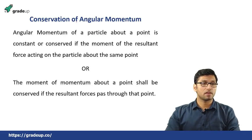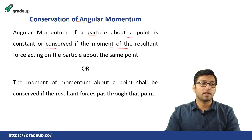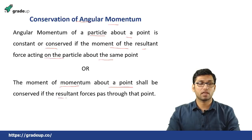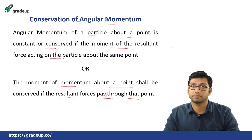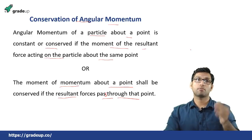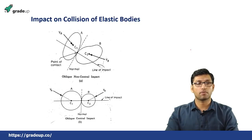The conservation of angular momentum states that the angular momentum of a particle about a point is constant or conserved if the moment of the resultant force acting on the particle about the same point is zero. Or, the moment of momentum at a point shall be conserved if the resultant force passes through the same point. So if the resultant forces act at the same point, then angular momentum is conserved.